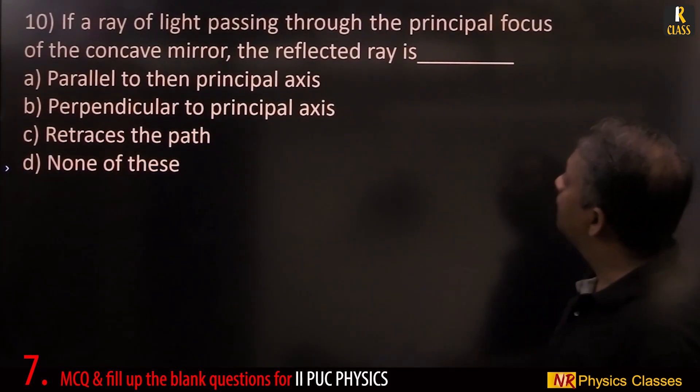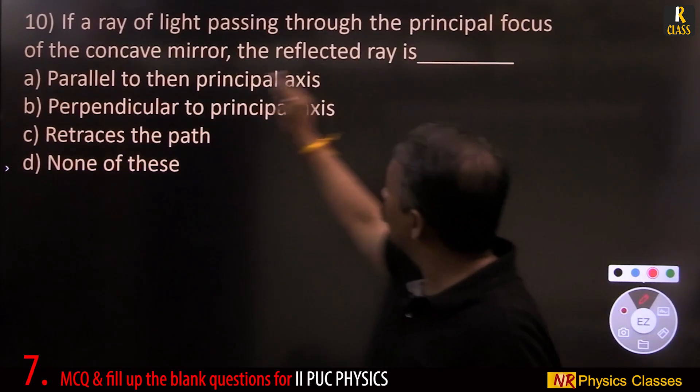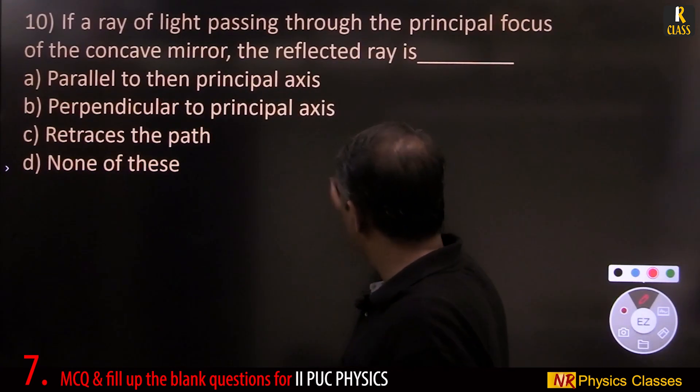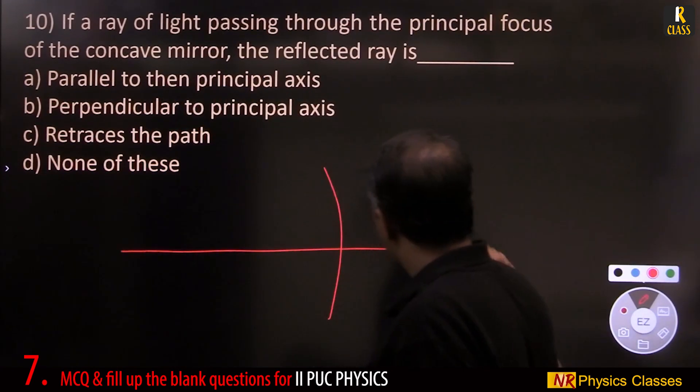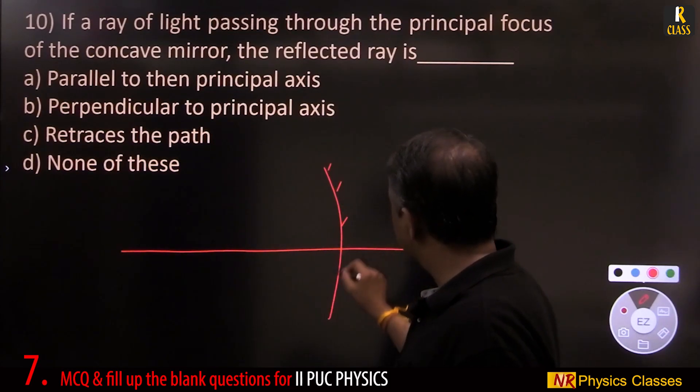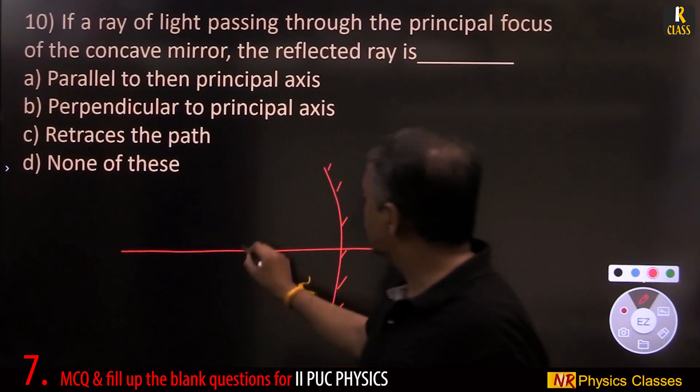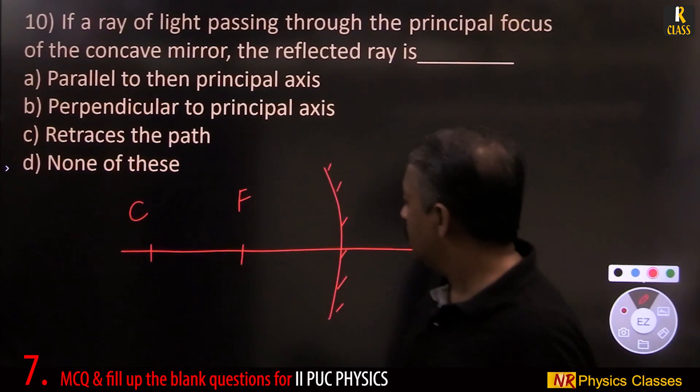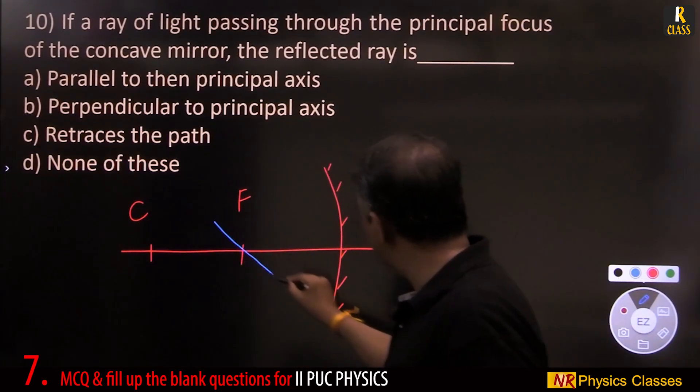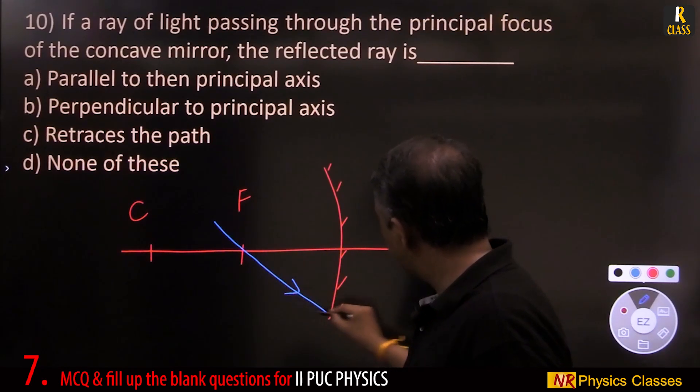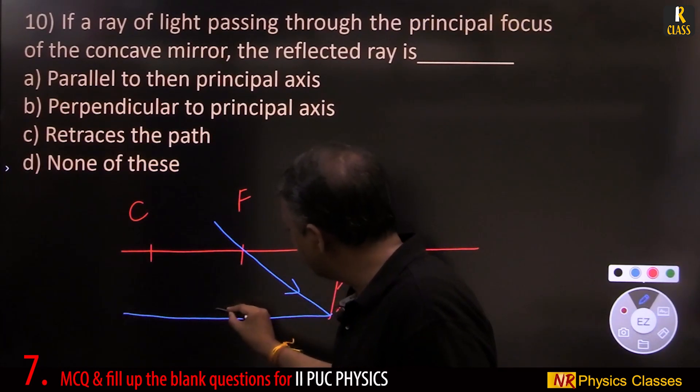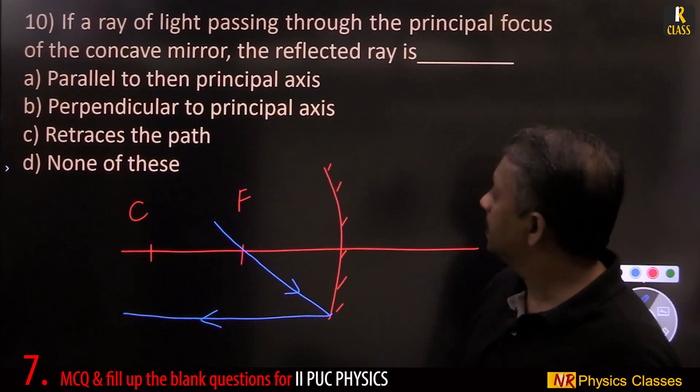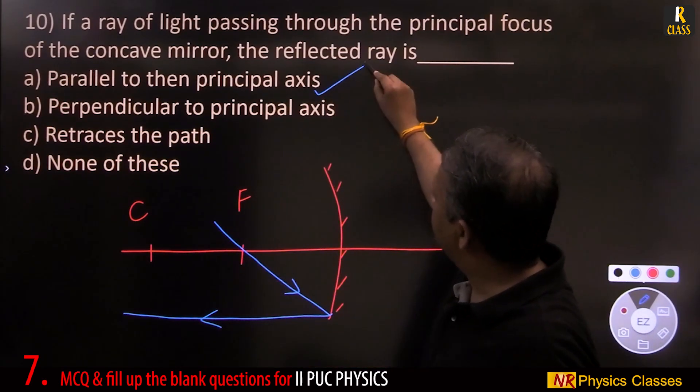If a ray of light passing through the principal focus of a concave mirror. Concave mirror, principal focus. This is focus and this is center of curvature. If a ray of light passes through principal focus, then after reflection it becomes parallel to the principal axis.